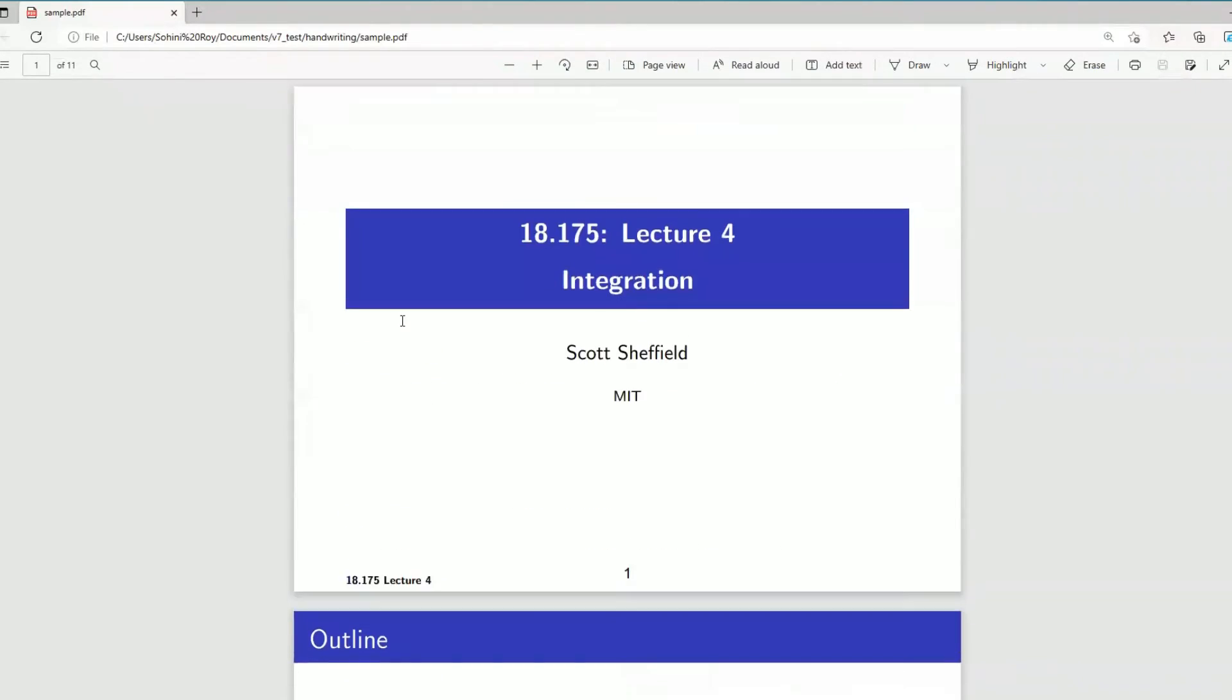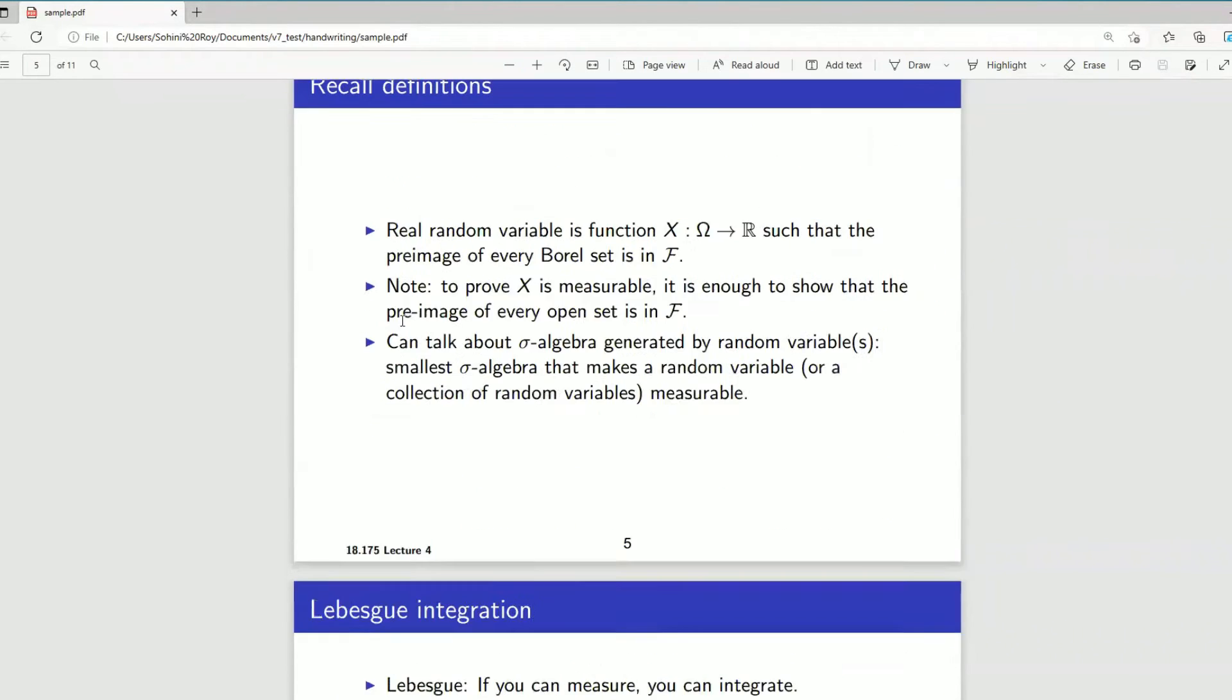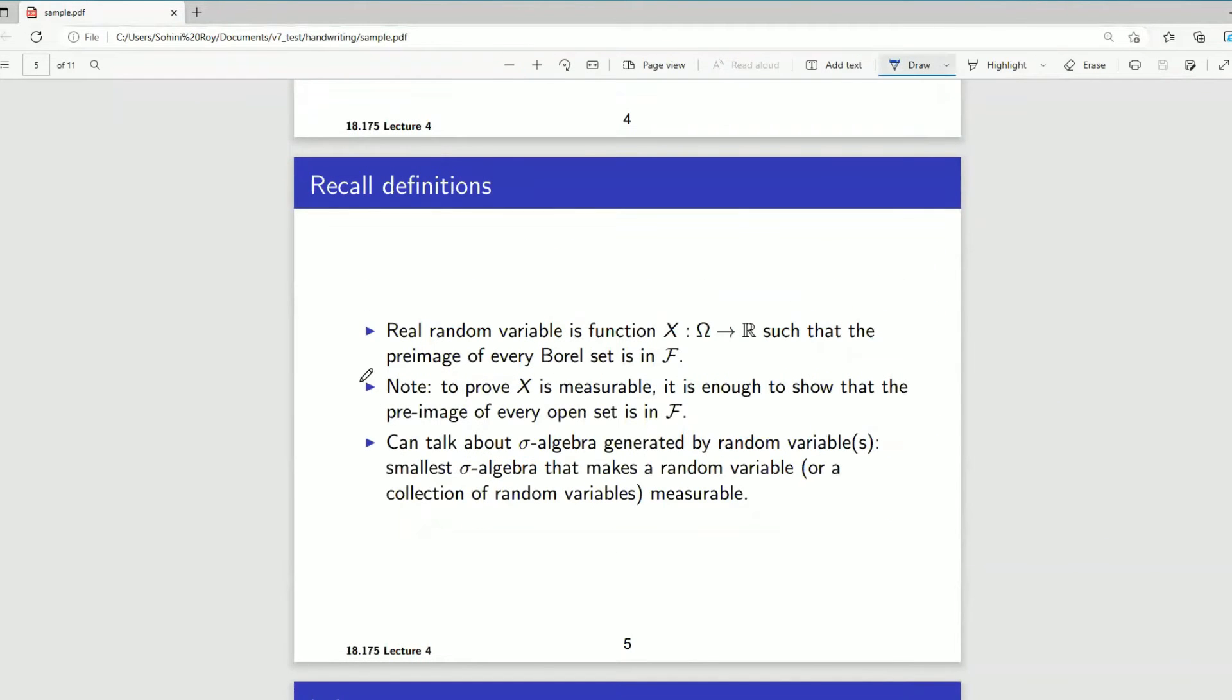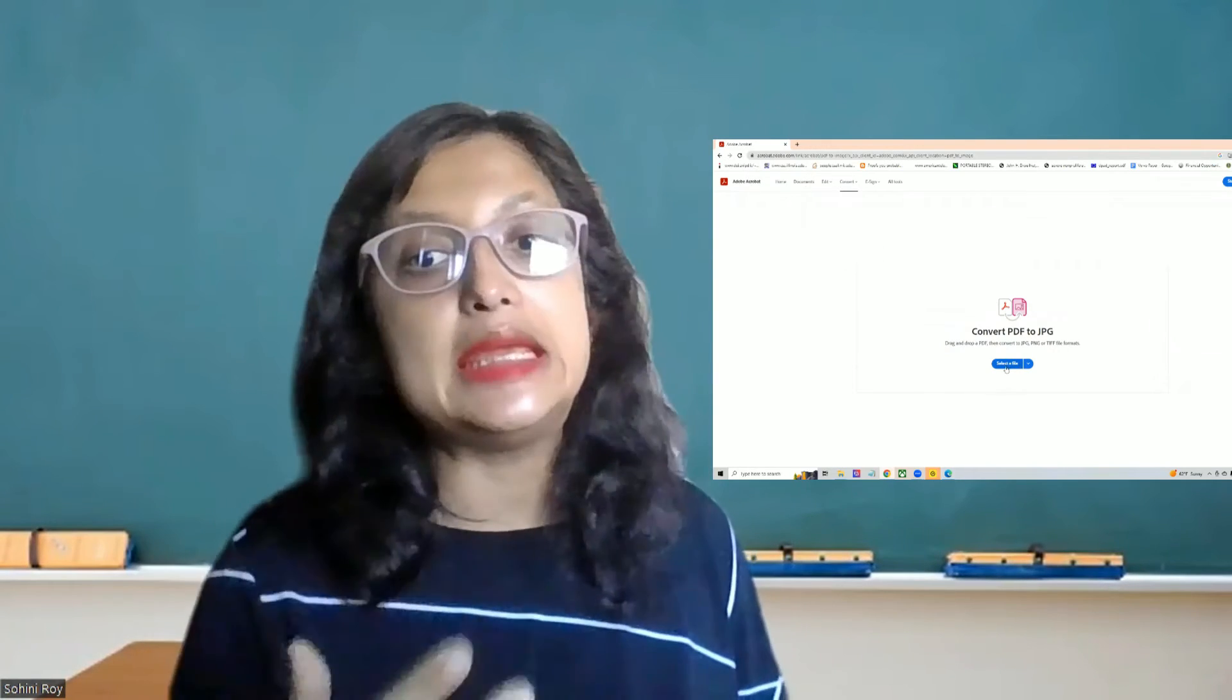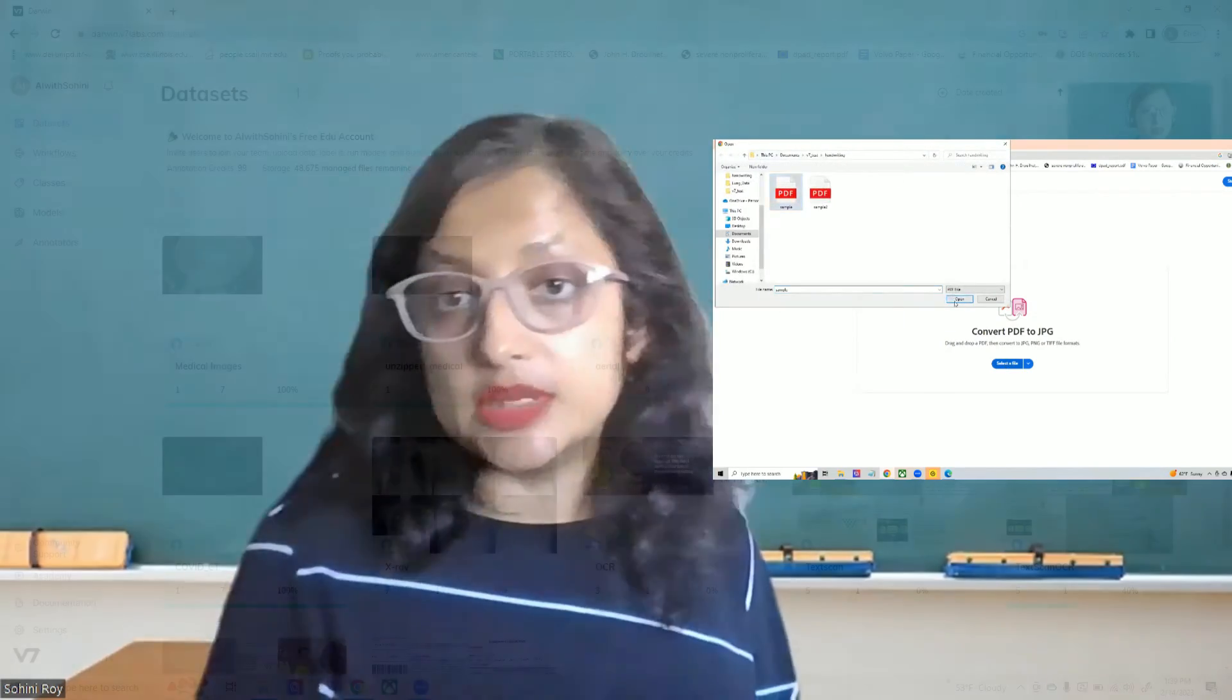Now, first off, I downloaded some PDFs which were class notes. And then I used my Wacom tablet in order to annotate. So pull up these PDFs and annotate these slides. And those annotated versions, I then use the Adobe PDF to JPEG converter to convert these into images.